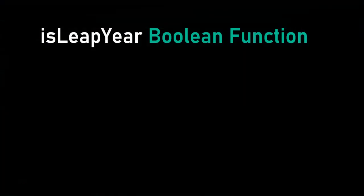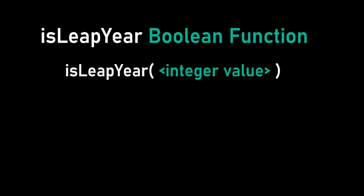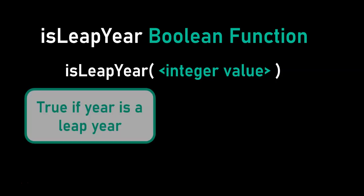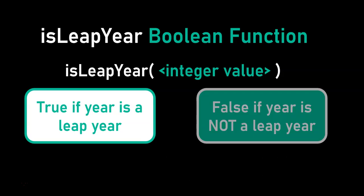There's a function called isLeapYear. It's a Boolean function, and you give it an integer value that represents the year — so you could say 2020 or 2021. Because it's a Boolean function, it returns true if that year is a leap year, and false if it is not.